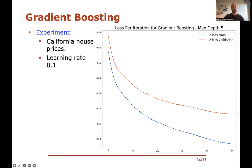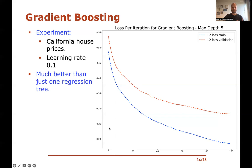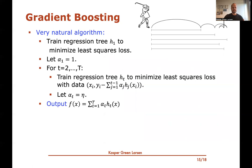Running this on the California housing dataset with a learning rate of 0.1 and trees of maximum depth five — the x-axis is the number of iterations of gradient boosting, i.e., how many trees combined so far. You can see the training loss (least squared loss on all training data) decreases, and the validation loss on a held-out 20% also decreases steadily with the number of iterations. One thing worth mentioning is that it's much better than just training a single regression tree — the loss is much higher at the beginning when using just one tree, both on the training data and on the validation set. Training multiple regression trees by always fitting the residual and using a small learning rate works really well in practice.